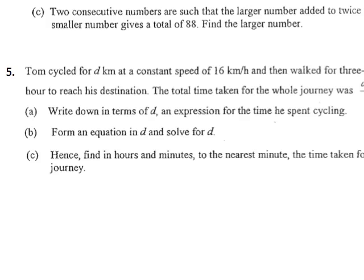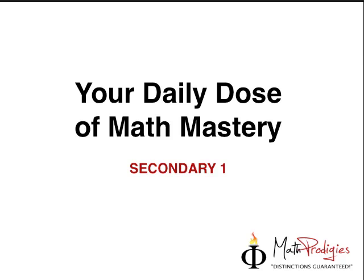The question says Tom cycled for D kilometers at a constant speed of 16 kilometers per hour. So straight away I know I have to draw a timeline. And then he walked for three-quarter of an hour to reach his destination. Simple. The total time taken for the whole journey was D minus 3 over 8 hours. I know for some of you it might be mind-boggling, but first let's just look at this as a timeline. Let's draw a timeline so that it becomes easier for you.